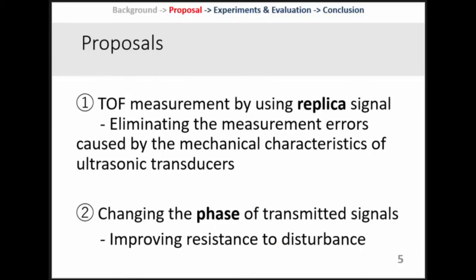I will introduce two proposals to measure the accurate ultrasonic TOF using COTS ultrasonic transducers. The first proposal is TOF measurement by using a replica signal — it can eliminate the measurement errors caused by the mechanical characteristics of ultrasonic transducers. The second proposal is changing the phase of transmitted signals, which can improve the resistance to disturbance. These two proposals make it possible to measure reliable ultrasonic TOF.